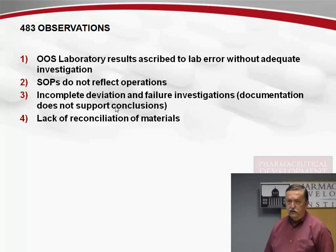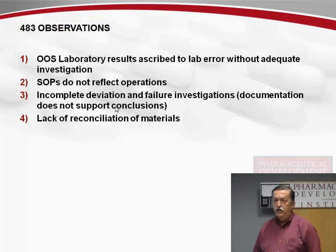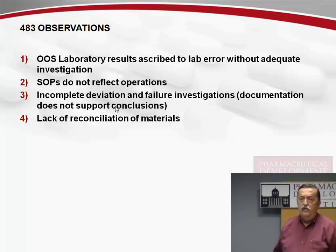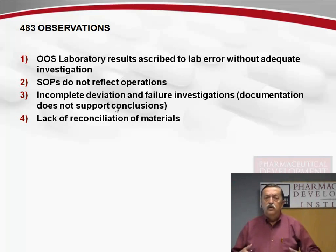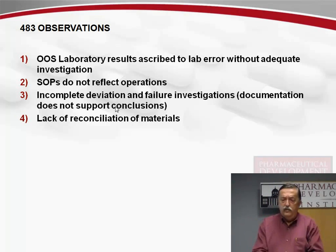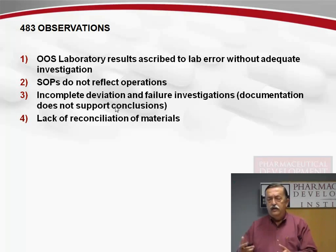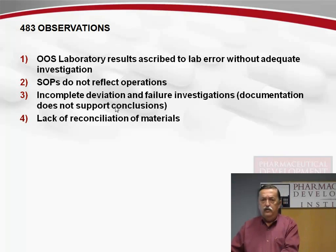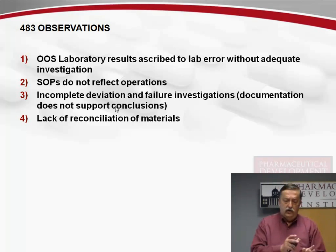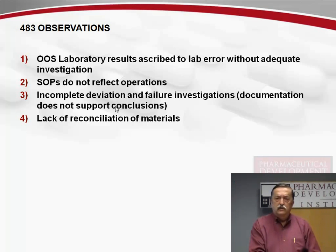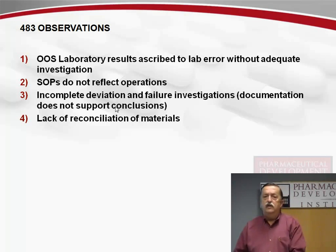This is particularly important with labeling, and the GMP regulations actually call out the procedure you are to use for labeling your product. You start by inspecting the labeling area to ensure there are no labels, no product, nothing present. You then count your labels, bring them into the labeling area along with the product to be labeled, and proceed with labeling. At the end of the procedure, you have final labeled product, leftover labels, and labels that were ruined. When you add those three numbers together, they should equal the original lot count.